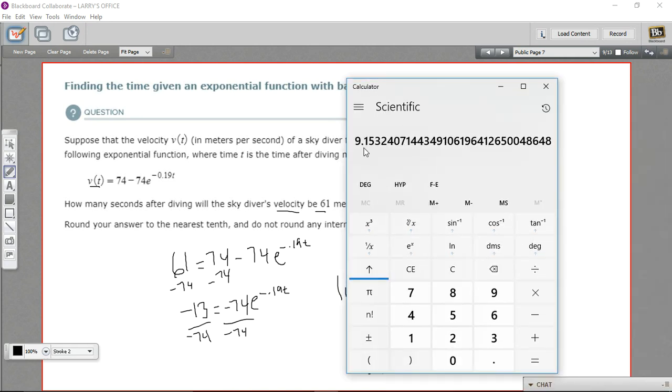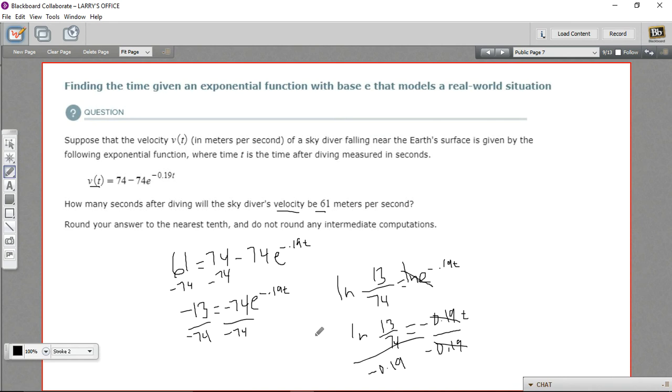So 9.2 seconds. So t equals 9.2 seconds. So that is how to find the time in an exponential function with base e.